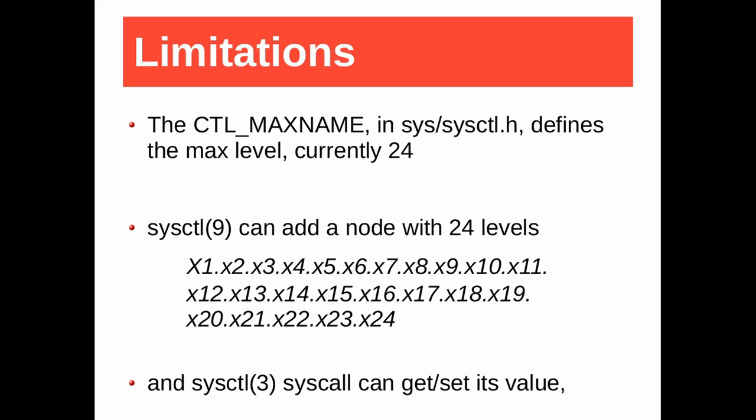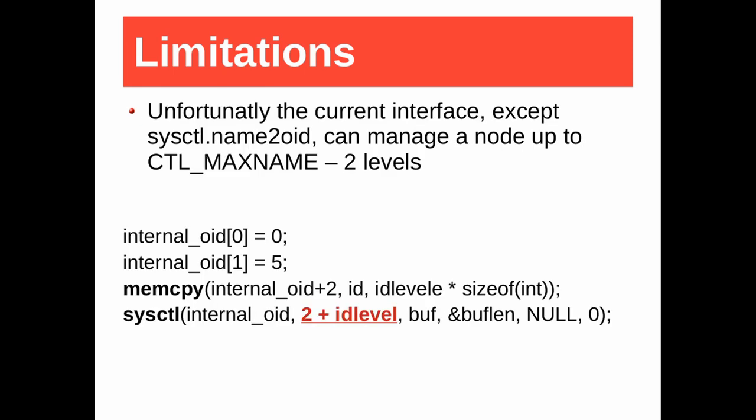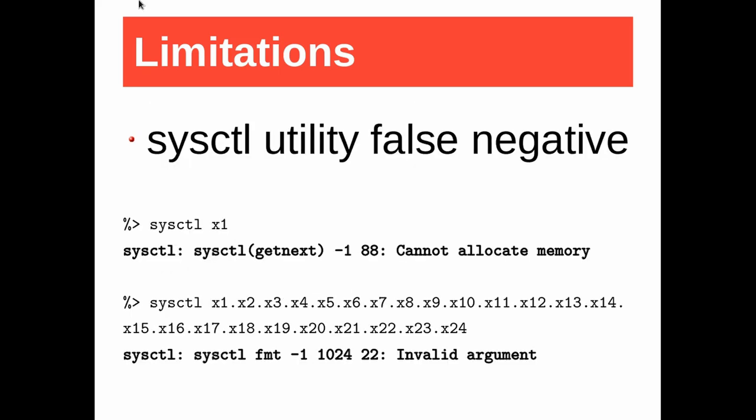SYSCTL_9 is the kernel interface to add or remove an object from the MIB. Currently the max level of an object is set to 24, so we can add an object with 24 levels. The sysctl system call can get or set its value. Except for NAME2OID, the nodes of the current interface can manage a node up to CTL_MAXNAME minus two levels. The problem: if we want to know the description of an object with 24 levels, that requires 24 plus 2 = 26, so sysctl correctly returns -1, an error. This example is similar to the code of the sysctl utility — this is a fault of the utility. It is a false negative.